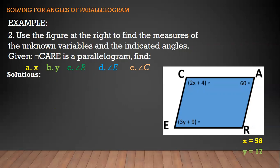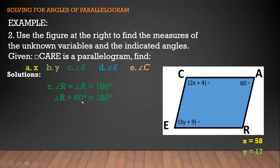Next, find angle R. Using consecutive angles being supplementary: angle R plus angle A equals 180 degrees. Since angle A is 60 degrees, we substitute: angle R + 60 = 180. Transposing: angle R = 180 − 60 = 120 degrees. So the measure of angle R is 120 degrees.